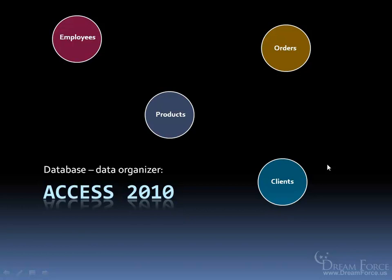Microsoft Access is what is called a relational database. A relational database means that these tables can relate to each other. When you have a filing cabinet with information on your employees, your products, maybe the orders they made — do you dump them all into one folder? That's really inefficient, because first of all you have to lift this 20-pound folder out, and then you have to sort through the products and orders just to find your employees.